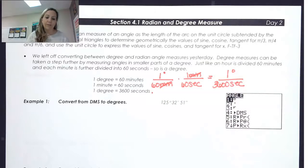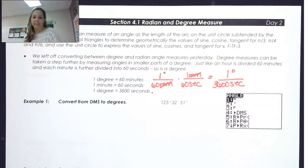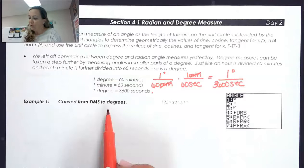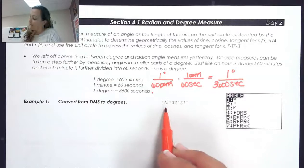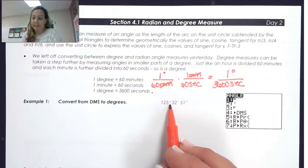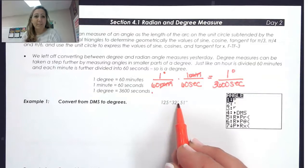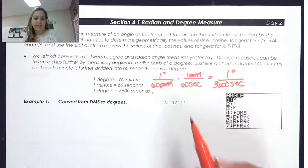What we want to do is use our calculator to help us convert from degrees, minutes, seconds to decimal degrees. We have 125 degrees, 32 — that's read as minutes — and 51 seconds.